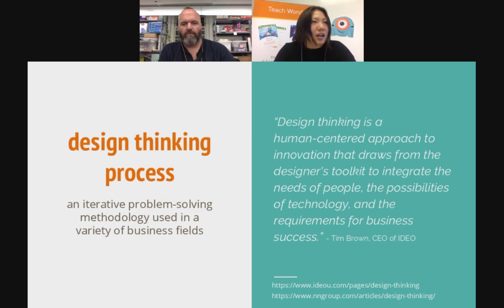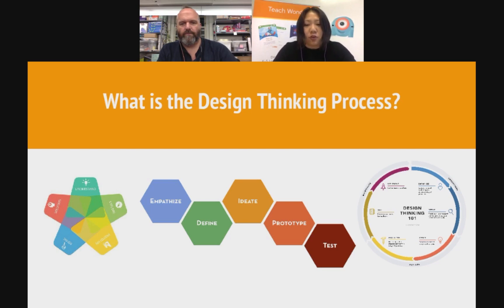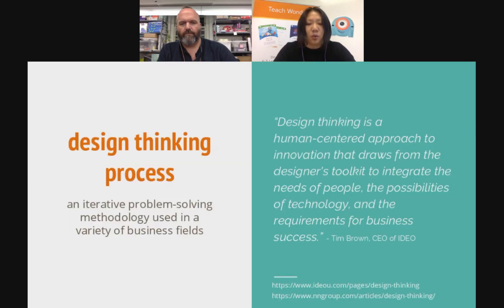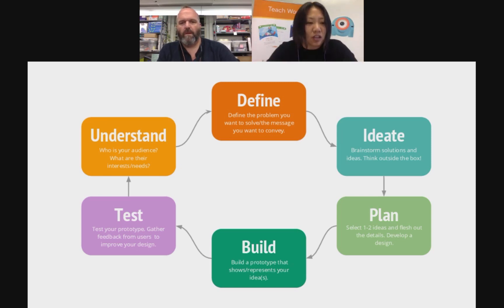IDEO identifies these phases of the design thinking process: empathize, define, ideate, prototype, and test. For curriculum design thinking, I've broken out the prototype stage a little further into two steps — plan and build — because I think prototyping is a large stage. We're going to walk you through this, quickly define it, and then walk through an example to make sure everyone's on the same page.